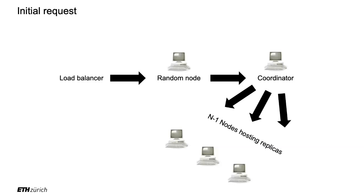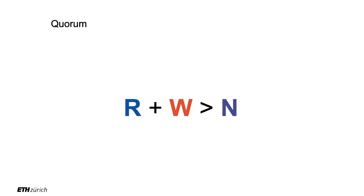Why should R plus W be greater than N? If R plus W is less than or equal to N, you could write to some nodes and then read from other nodes and never know you didn't read what you just wrote. I think the intuition is that this requirement gives you the guarantees mathematically — in terms of eventual consistency — that a key-value store should provide.